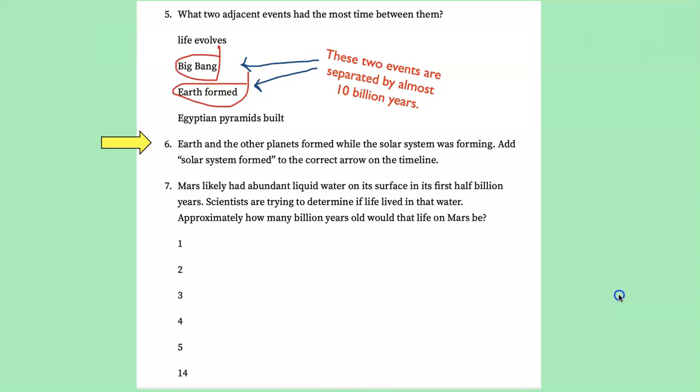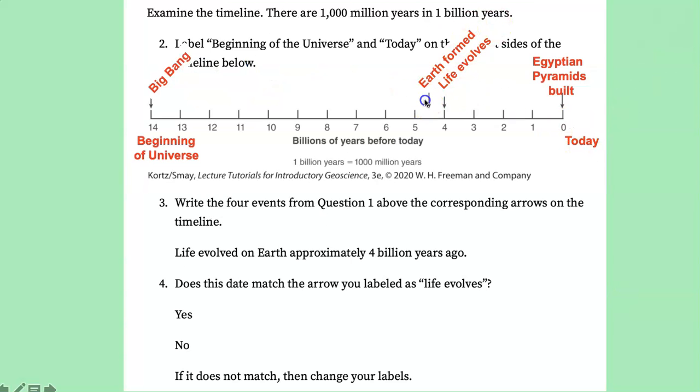Earth and the other planets within the solar system all formed at the same time. Now I want you to add that solar system formation to your timeline. And here we have Earth formed. We're going to replace it with Earth and the solar system formed. Everything formed at the same time in our solar system.